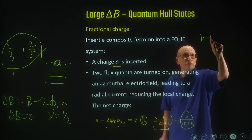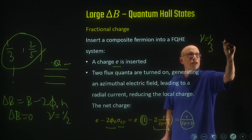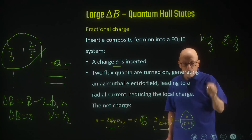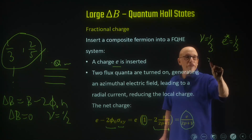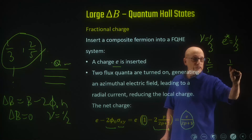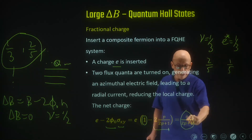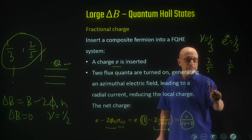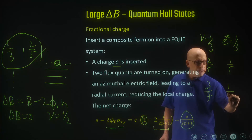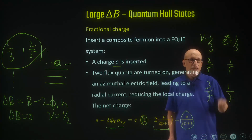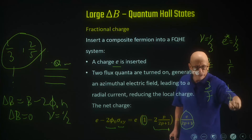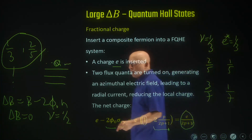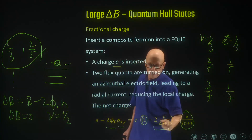We added an electron charge, plus the charge being pushed out. The value of that charge is two flux quanta times sigma_xy of the system, and sigma_xy is p over (2p+1). Doing the arithmetic, the charge is e over (2p+1). For nu equals one-third the charge e* is one-third. For two over five it's one over five, for three over seven it's one over seven. It's always one over the denominator — one over (2p+1) — independent of the numerator of the filling factor.